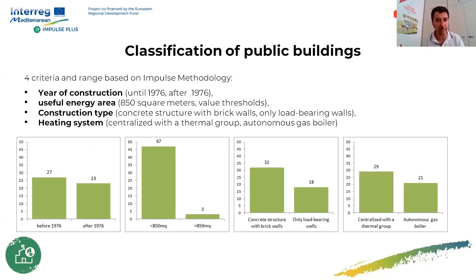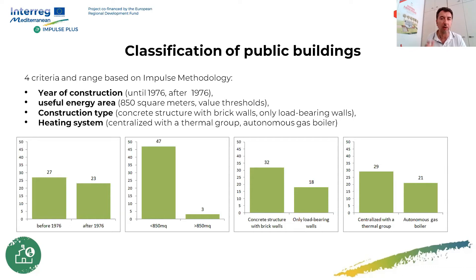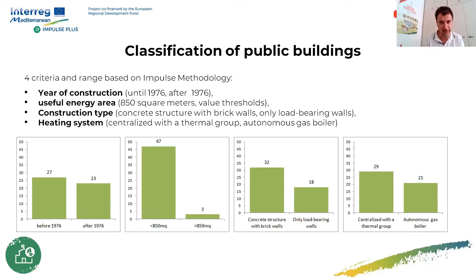We used four main criteria for organizing the clustering phase. We selected: the year of construction, the useful energy area, the construction type, and the heating system of the building. Each threshold was set for technical reasons. For example, the year of construction threshold was set at 1976, because that is the year of the first Italian law defining energy performance for public buildings, marking a clear difference between buildings before and after that date.